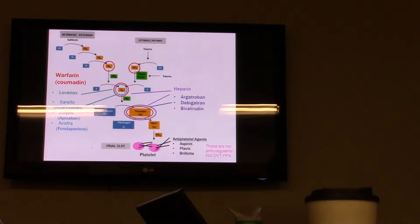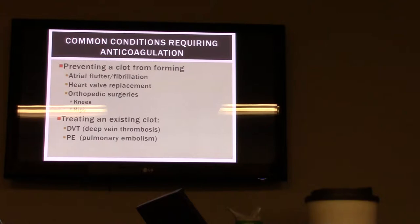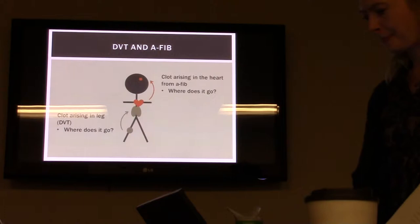We'll see this figure again throughout the talk when we focus on each one of these agents. Some common conditions that require anticoagulation include preventing clots from forming — typically from AFib or AFlutter, heart valve replacement, or after certain surgeries such as knee or hip replacement. You also see anticoagulation used to treat existing clots such as a DVT, a deep vein thrombosis, or pulmonary embolism.